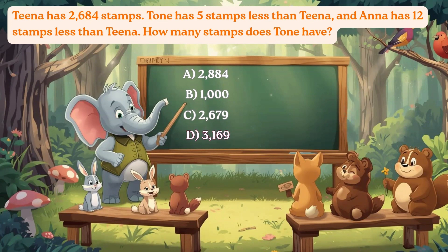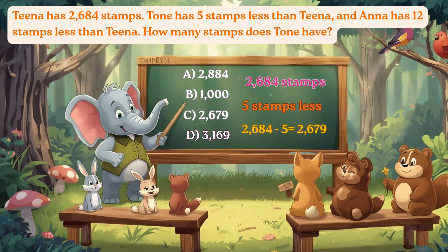Tina has 2,684 stamps. Tone has 5 stamps less than Tina, so we subtract 5 from 2,684. That's 2,684 minus 5, which equals 2,679. So Tone has 2,679 stamps. The correct answer is Option C, 2,679.